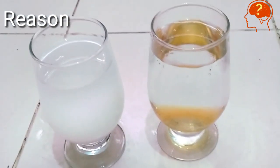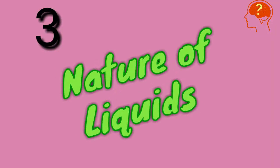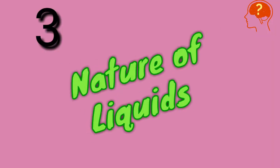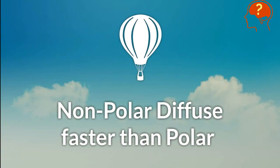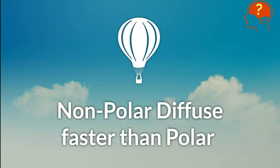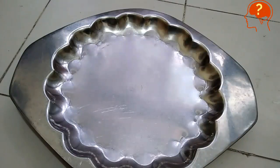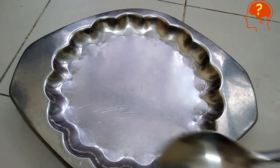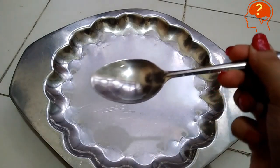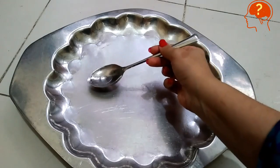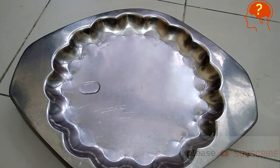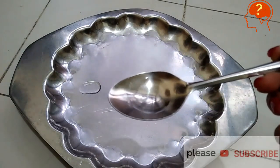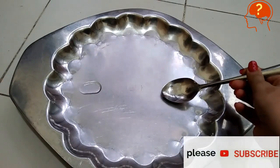The next factor is the nature of liquids. Non-polar liquids diffuse faster than polar liquids. To prove this, I am using a clean steel plate. I will drop one tablespoon of water at one corner of the plate — not too much, otherwise it becomes time-consuming — and on the other side I will drop half a tablespoon of petrol.